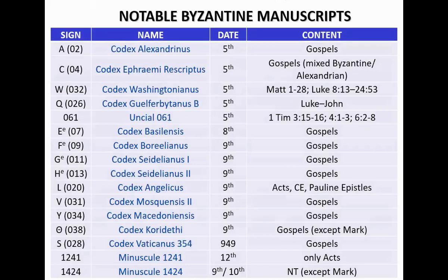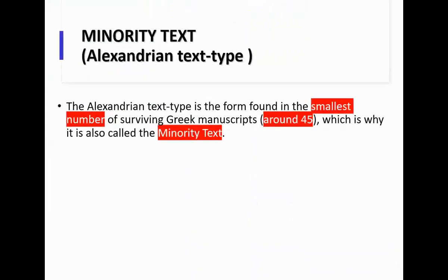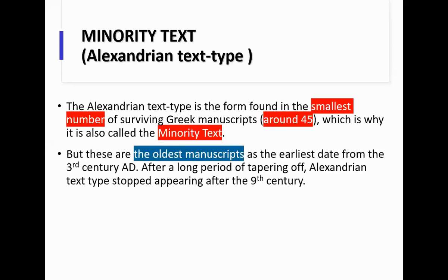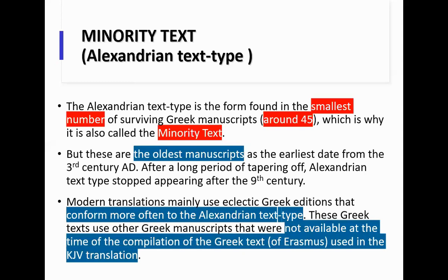Those Greek texts used for translation are compiled by scholars and called eclectic editions. They're not just taking a single document — they take a whole lot of different documents and compile a text, which is used as the source for translation. Here are some notable Alexandrian manuscripts going back to the 3rd century. The Alexandrian texts would have originated from Egypt, while the Byzantine predominantly came from the area ruled by Constantinople. The Orthodox Church continued that tradition because they spoke Greek and kept the Greek scriptures.